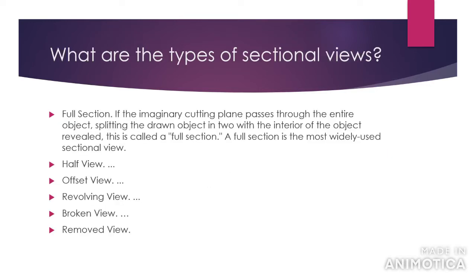What are the types of sectional views? You have seven different types of sections: the full section, half section, offset section, revolving section, broken section, and removed section. By the end of the video you should know what all the different types of views are and know the differences between them.